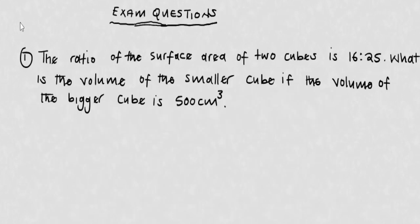The first question: the ratio of the surface area of two cubes is 16 to 25. What is the volume of the smaller cube if the volume of the bigger cube is 500 cubic centimeters? You need to be very familiar with how to handle such questions. We have the ratio of the surface area.